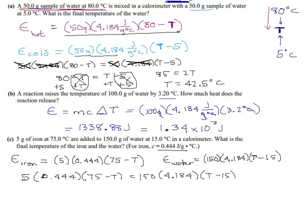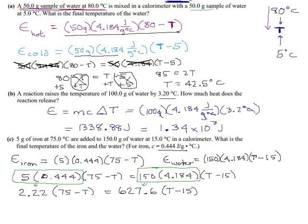Okay, now it gets a little algebra-y. First of all, these are just numbers and we can multiply these. We can do 5 times 0.444. And over on this side, we can do 150 times 4.184. Then instead of two numbers up front, we'll just have one. 5 times 0.444 is 2.22. So here we get 2.22 times 75 minus T. On this side, we do 150 times 4.184. And we get 627.6 times T minus 15. So what I did there is just combine these two numbers by multiplying to get the 2.22, and multiply these two numbers together and that gave me the 627.6.